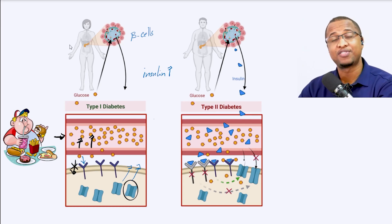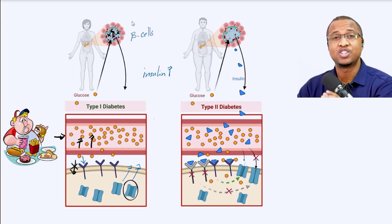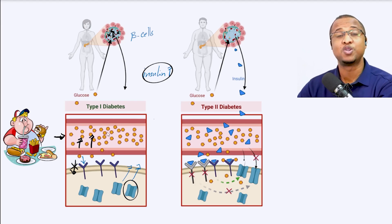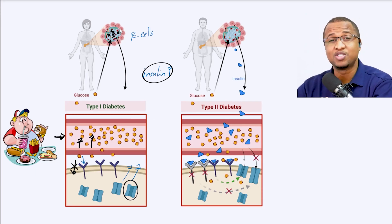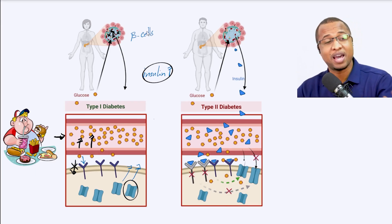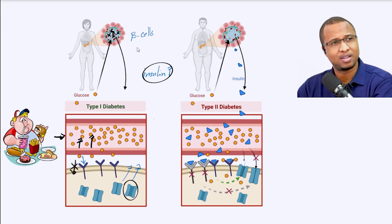Now, what happens when you have type 1 diabetes? Your immune cells will destroy these beta cells by mistake. They will just come and destroy your beta cells that are supposed to make insulin, which should come and tell your cells to get glucose. I say by mistake because your immune system is supposed to know all the cells in your body. But somehow they come, look at beta cells, and go like "who are you?" and start destroying them.